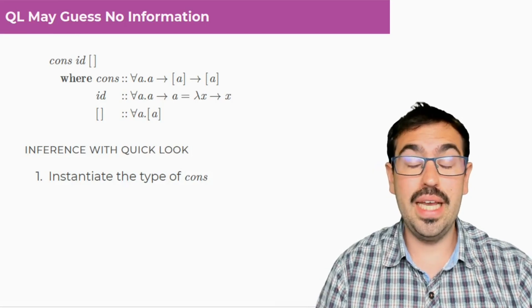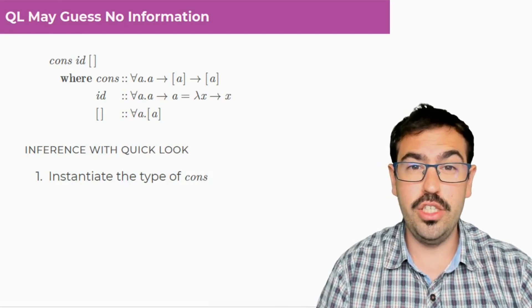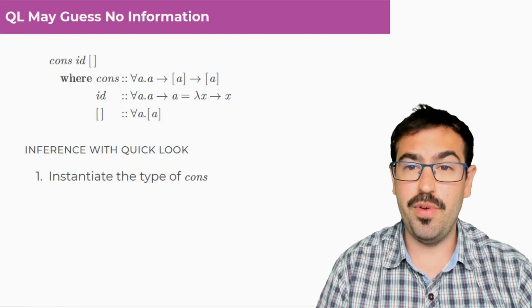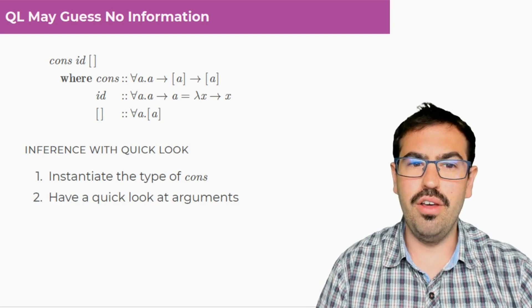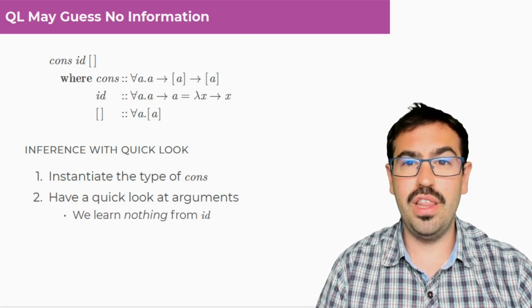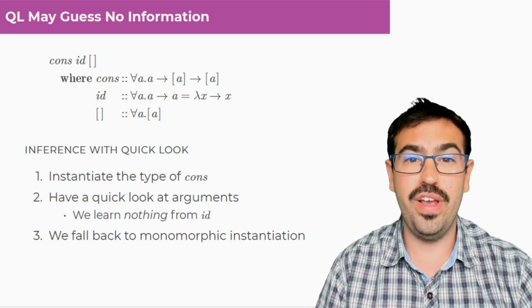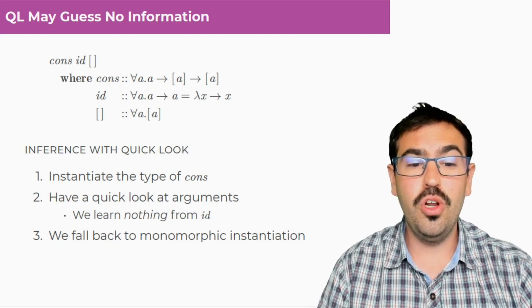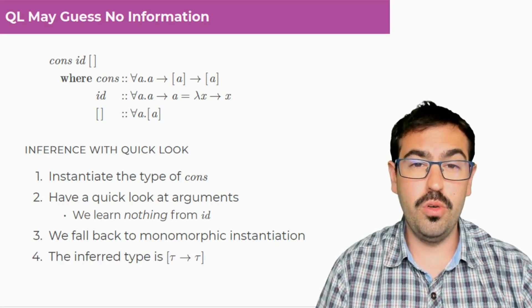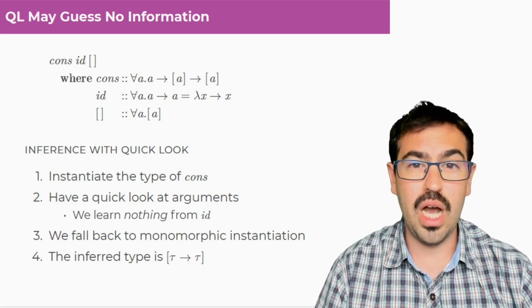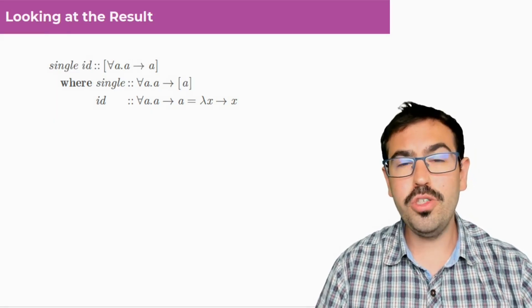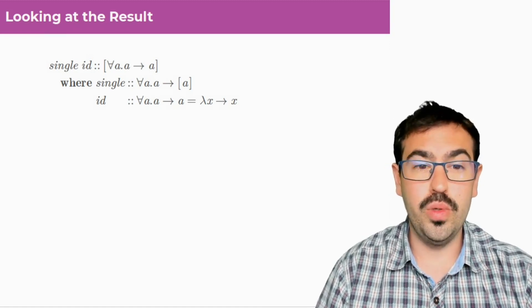And actually, it can be the case that quick look guesses no information. That's, for example, cons ID with an empty list. In this case, we will instantiate the type of cons, have a quick look at the arguments, and we will learn nothing from ID, and we will learn nothing from the empty list. So we need to fall back to monomorphic instantiation. And the result will be that the inferred type is the most usual list of tau to tau, where these taus are monomorphic types.